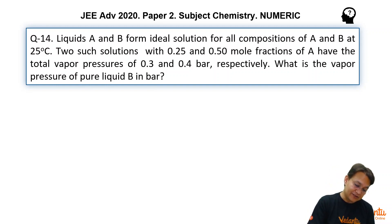So the situation is effectively like this: we have one solution in which A and B is there, the mole fraction of A is 1 by 4, mole fraction of B is 3 by 4, and it is creating a pressure of 0.3 bar.